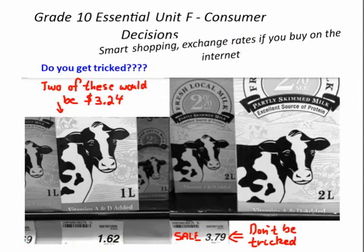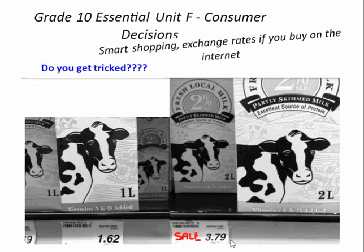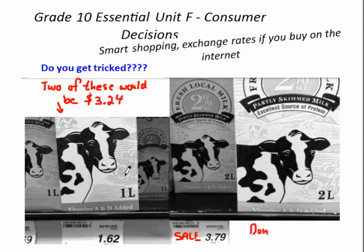Unit F is consumer decisions — smart shopping and exchange rates. What's the matter with this picture? This is an actual photo from my Shoppers Drug Mart. Two of the smaller containers would cost $3.24, but you can buy the same two liters of milk for $3.79 — so you're being ripped off by 55 cents, and it even says 'sale.' Don't be tricked. They do this to you all the time. If you don't compare prices, you're being ripped off by thousands per year. We'll also check out money exchange in case you buy things on the Internet.